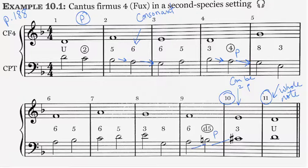So looking at second species and what happens on the offbeats, we can use dissonance passing tones or consonant passing tones, or we can use a consonant skip.